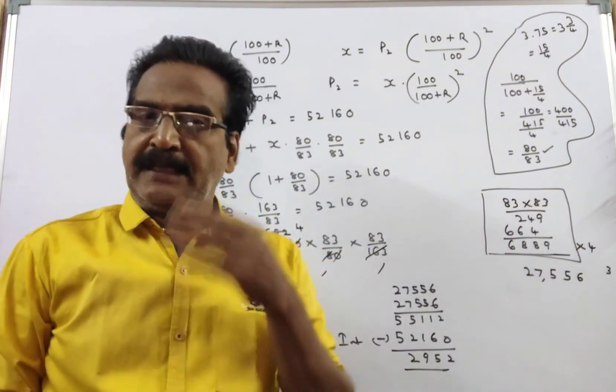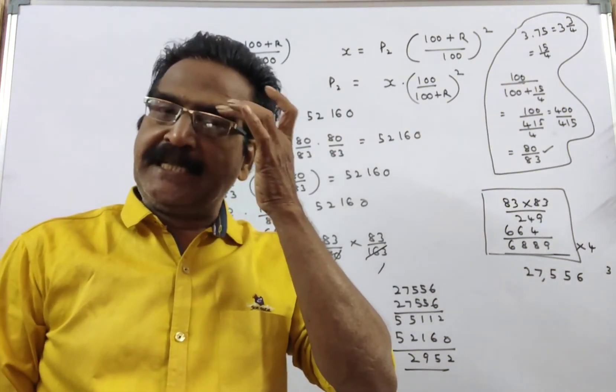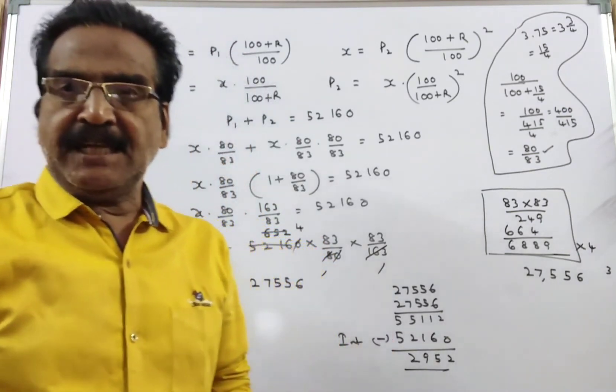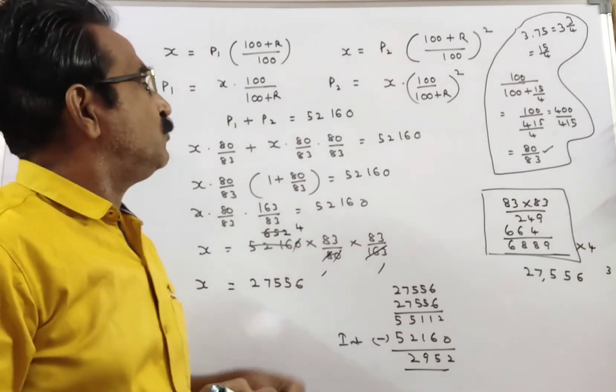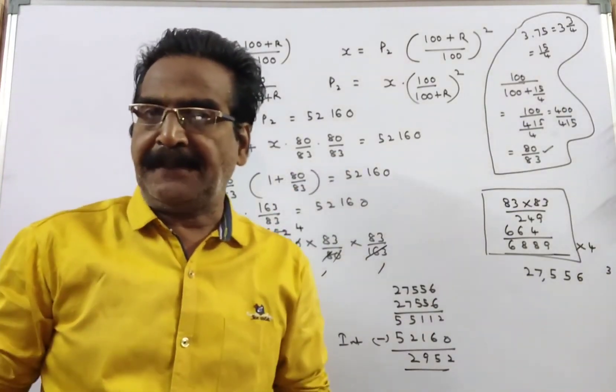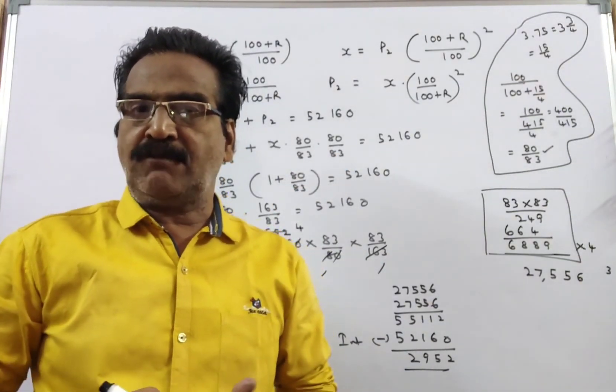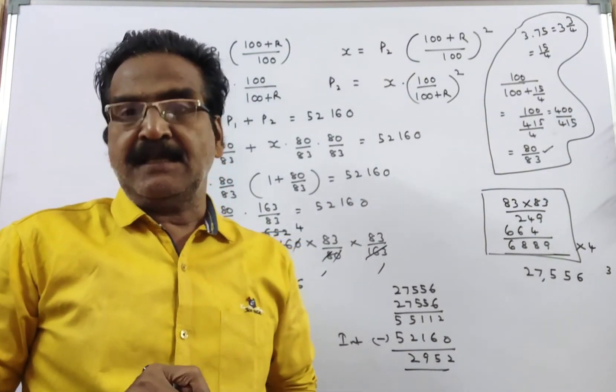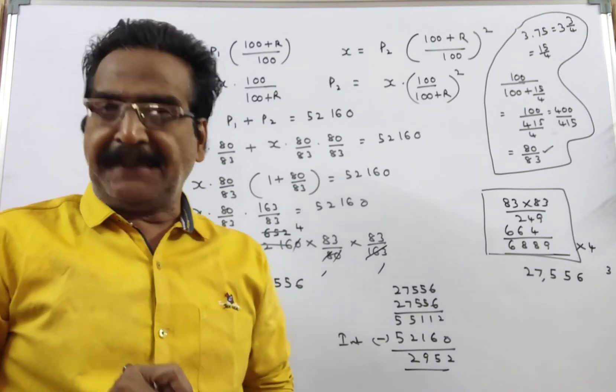Hi friends, good morning. Please look at the next problem in compound interest. The problem is given in the description box. A loan of Rs. 52,160 has to be repaid in two equal annual installments. If the rate of interest is 3.75%, what is the interest paid?